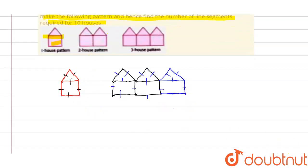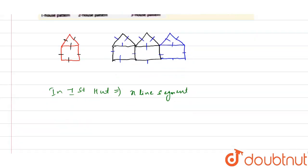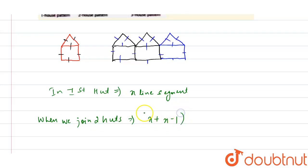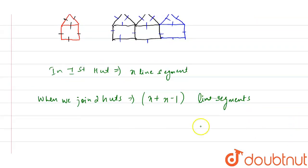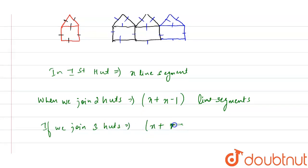This means that in the first hut there are x line segments. When we join two huts, we get x + (x − 1) line segments. Similarly, if we join three huts, we get x + (x − 1) + (x − 1) line segments.